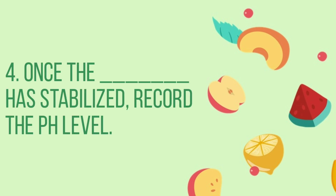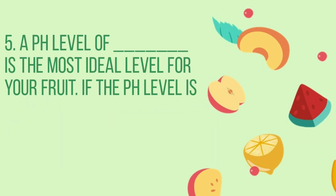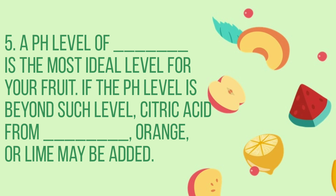Number 4: Once the blank has stabilized, record the pH level. The answer is reading. Number 5: A pH level of blank is the most ideal level for your fruit. If the pH level is beyond such level, citric acid from blank, orange, or lime may be added. The answers are 3.2 and lemon.